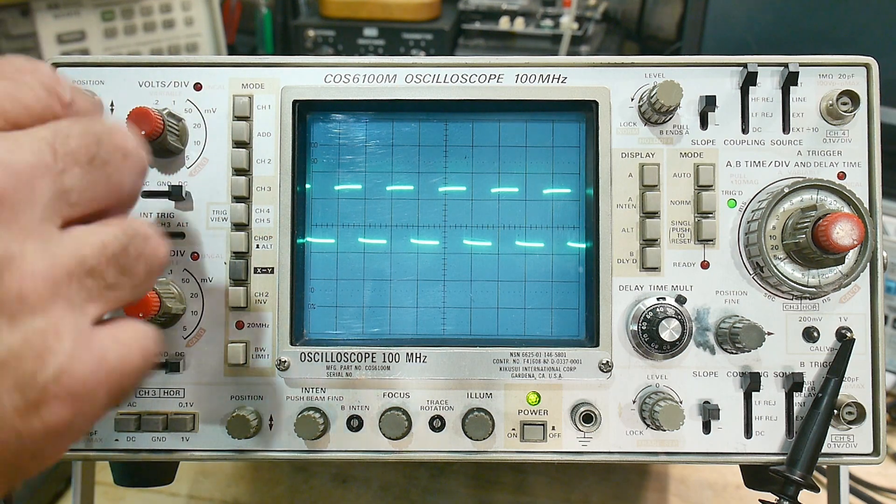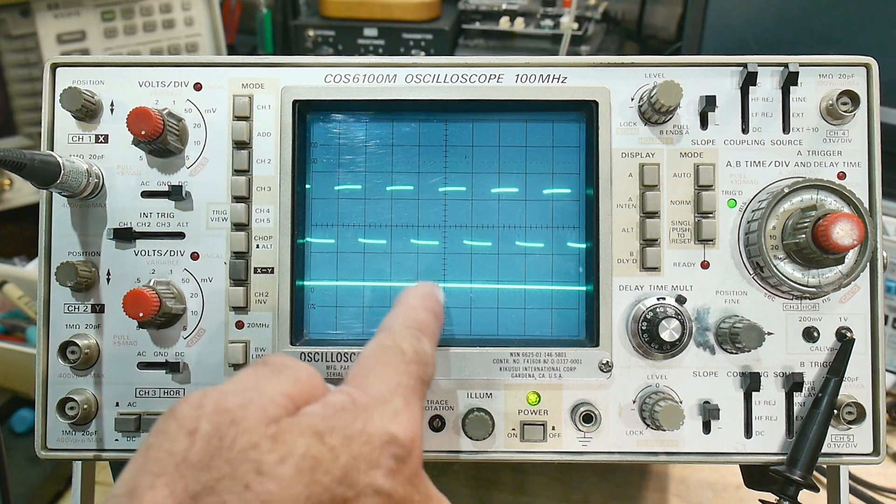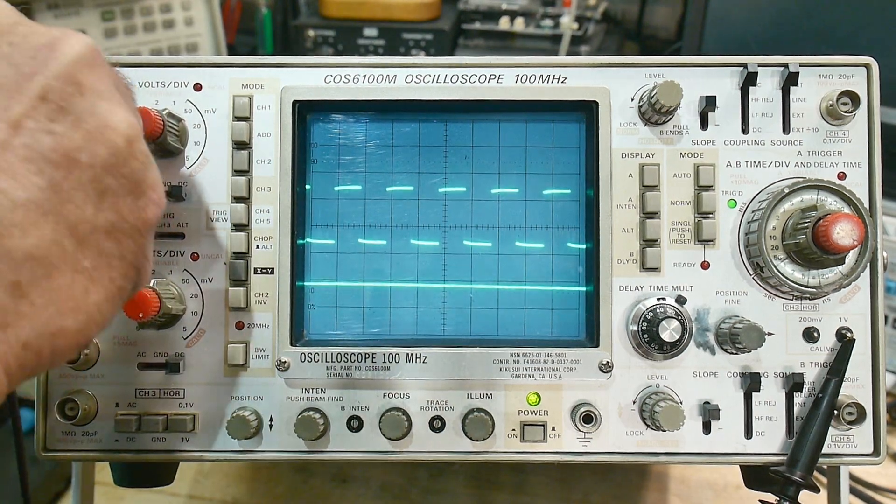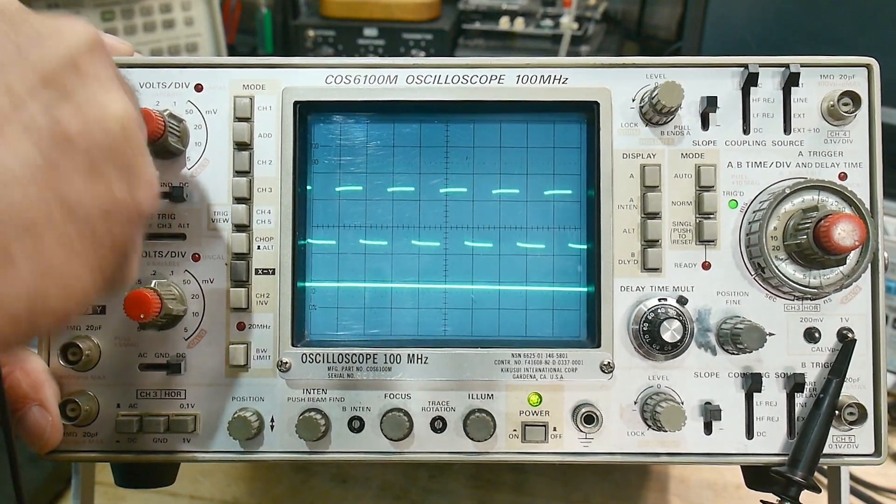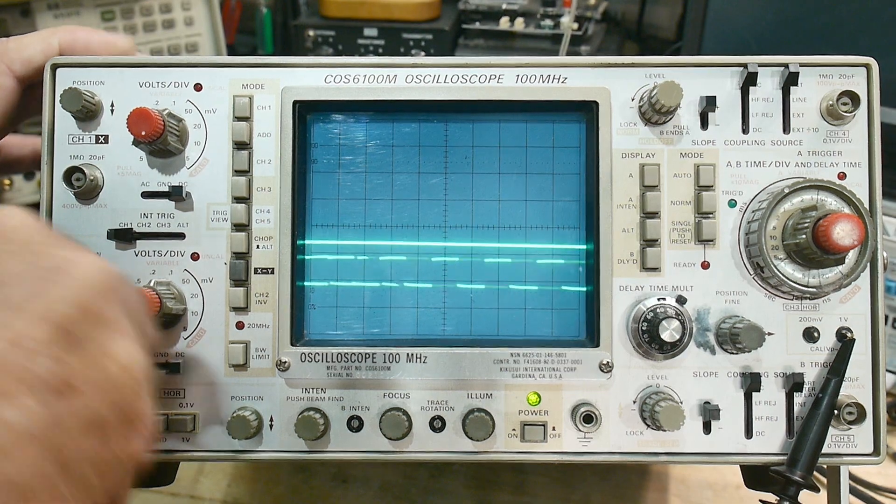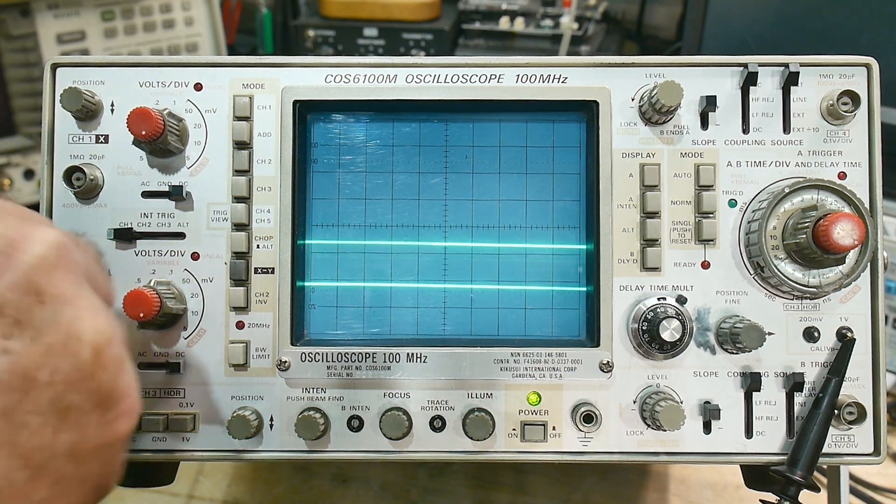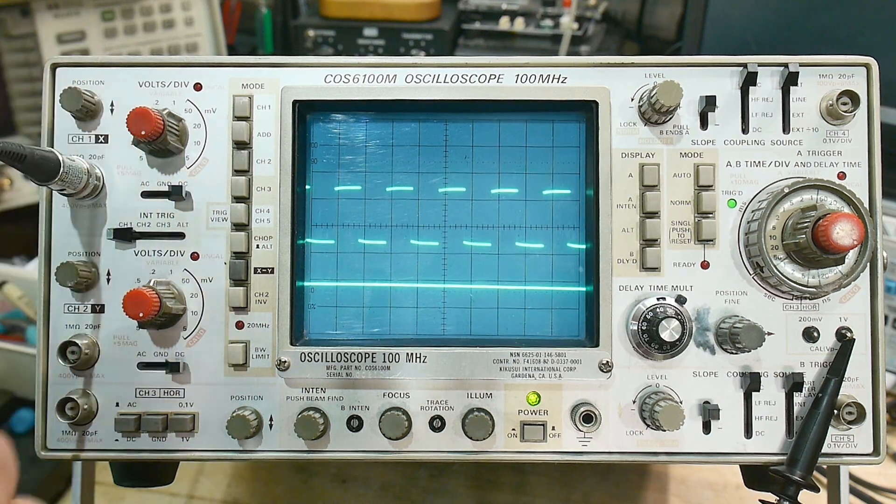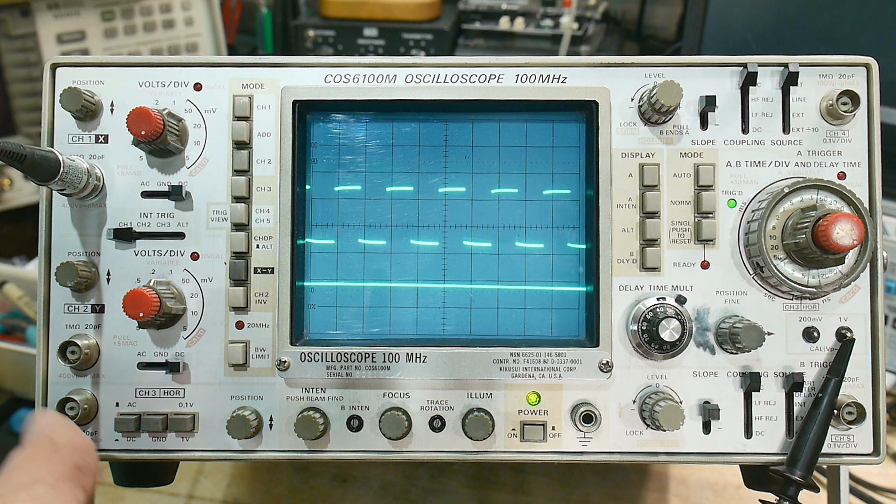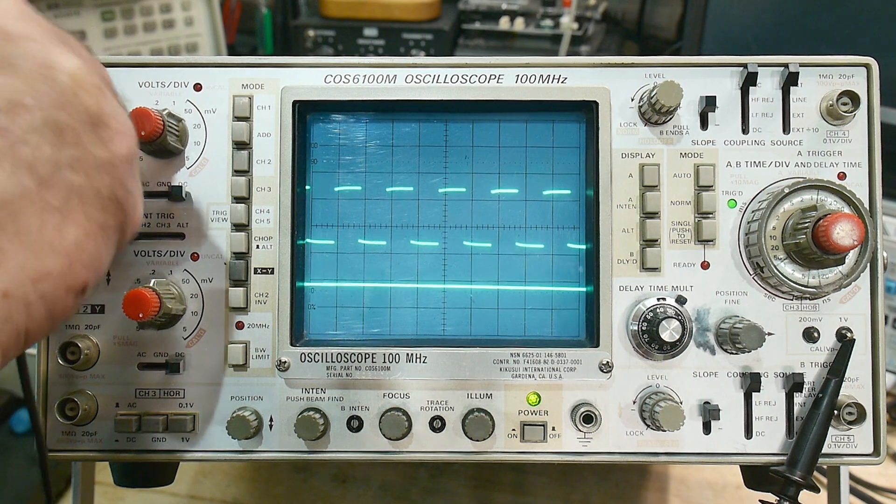It is a two channel scope, so here's channel one, I can put channel two, so there's channel two. I can move my scope probe down to channel two, and you can see it's down there, but it's not triggering. There's also a channel three which is down here.